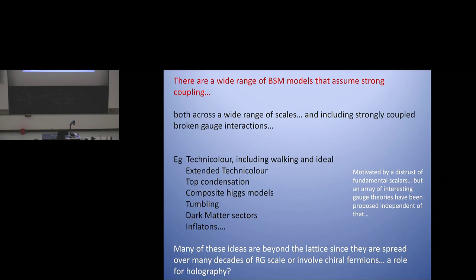Furthermore, these are typically theories that you can't study on the lattice. For example, they might have chiral fermions. But the ones I am going to talk about are theories where the strong coupling is spread over many orders of magnitude. That means you can't fit it on the lattice because you've got a finite number of points, and you want to probe small scales. So although there are lattice people who are trying, I think this is still an area that is open to holography as being possibly the best tool out there.